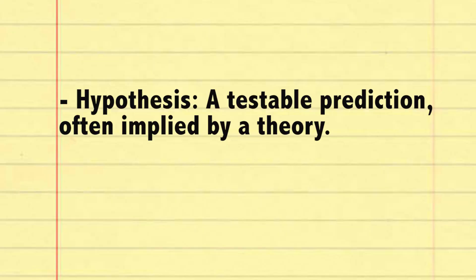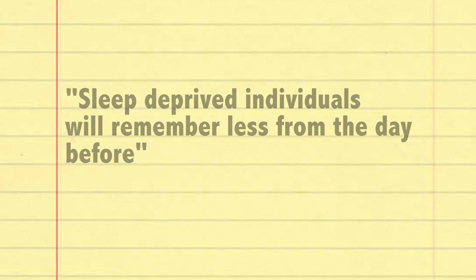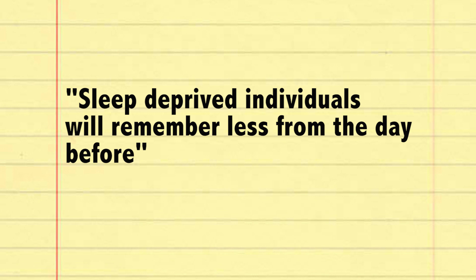No matter how reasonable this theory might sound, we have to put it to the test. Any good theory produces testable predictions called hypotheses. These predictions enable us to specify what results would support the theory and what results would disconfirm it. Now, a hypothesis is usually in the form of a statement — something you predict will happen when testing. In our memory example, a good hypothesis might be: sleep-deprived individuals will remember less from the day before.